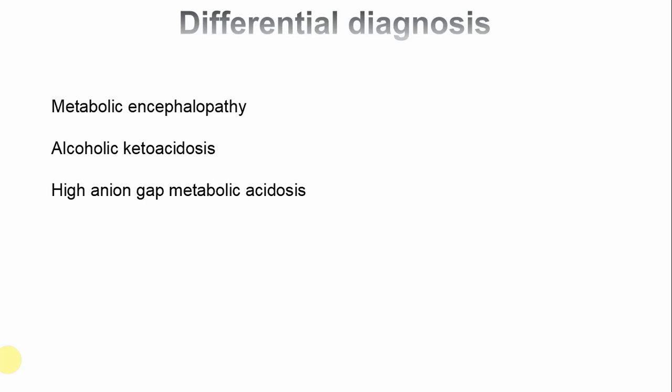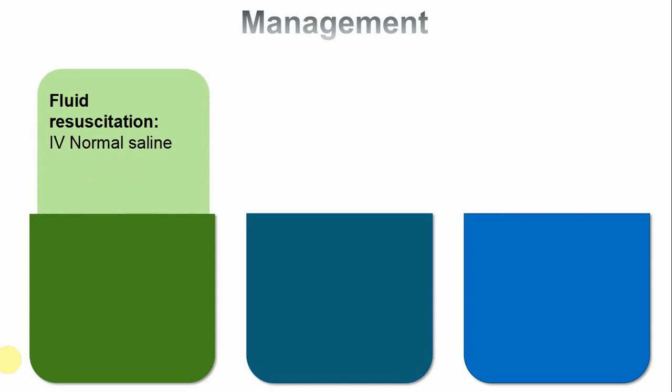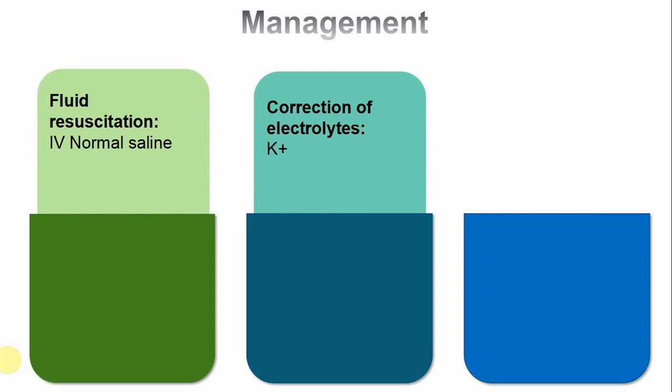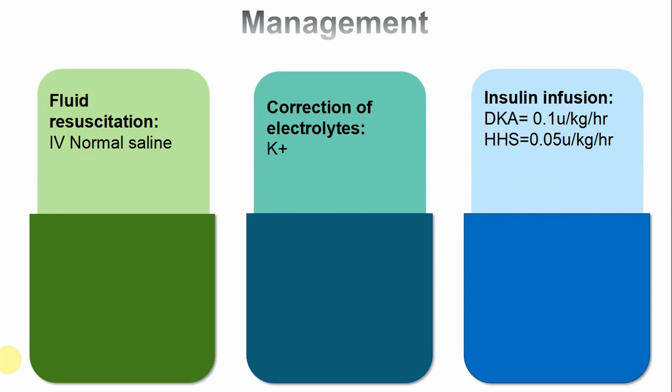With regards to management, the first and main focus is fluid resuscitation. We start with normal saline, then can convert to half-normal saline or dextrose as maintenance fluid. The second big area is electrolyte correction, with potassium being the primary concern. The third area is insulin infusion — 0.1 unit/kg/hour for DKA and 0.05 unit/kg/hour for HHS. Importantly, do not give insulin before checking and appropriately correcting potassium.